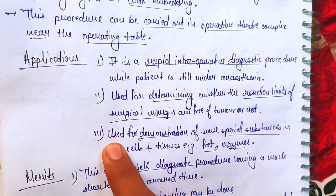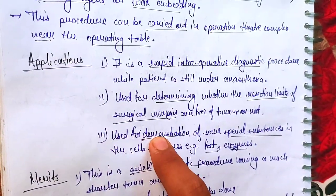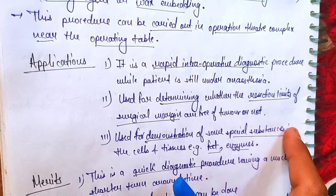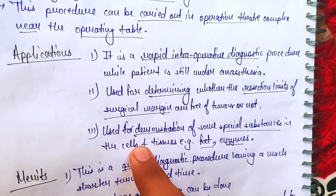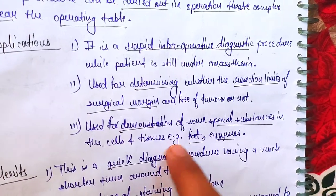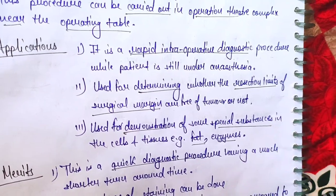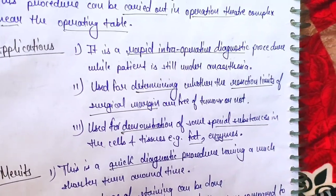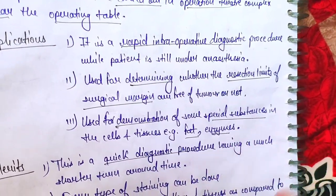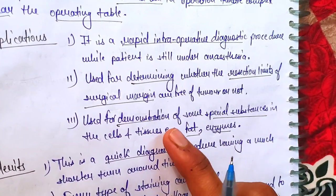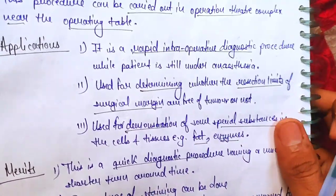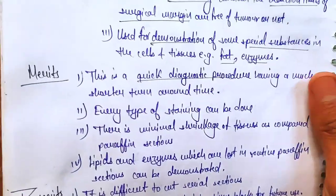The third application is that frozen sections can demonstrate some special substances within cells — such as fat and enzymes. These are demonstrated to find out whether they are present.